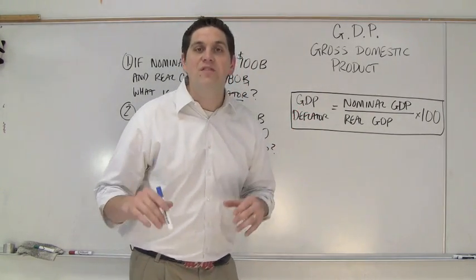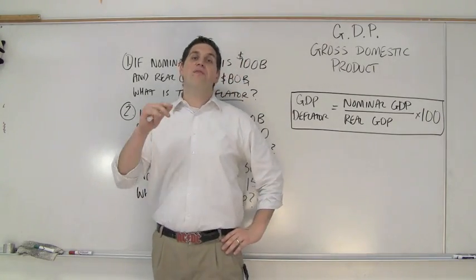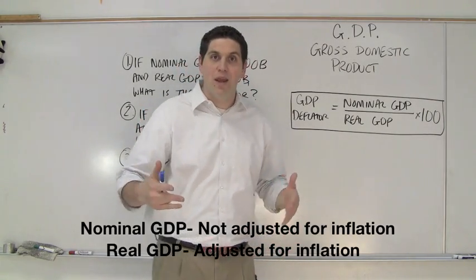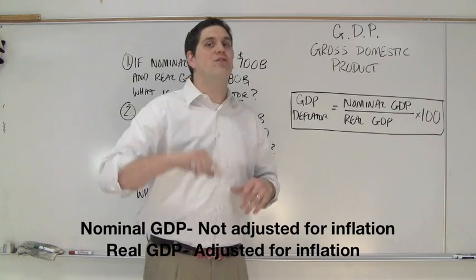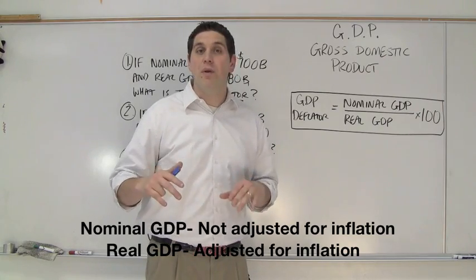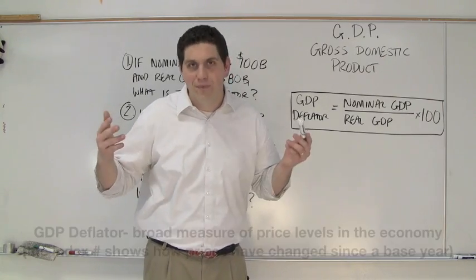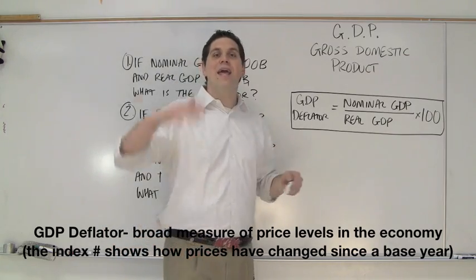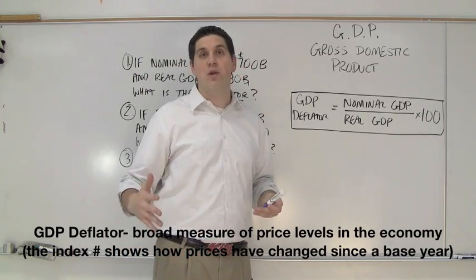In the last video you learned about nominal and real GDP. Nominal GDP is the GDP expressed in current prices, not adjusted for inflation. The real GDP is adjusted for inflation. So how do you adjust them? The GDP deflator — it deflates the nominal GDP.